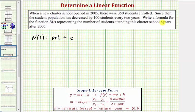It's important to recognize that t represents the number of years after 2005, and therefore the student enrollment in 2005 would be the initial amount or the value of b. Because in 2005 there were 350 students, this tells us b, the initial or starting amount, equals 350. This also tells us the ordered pair zero comma 350 would satisfy our linear function.